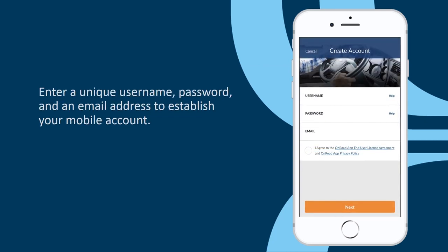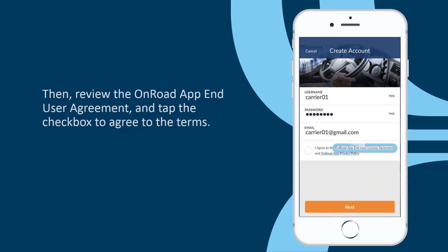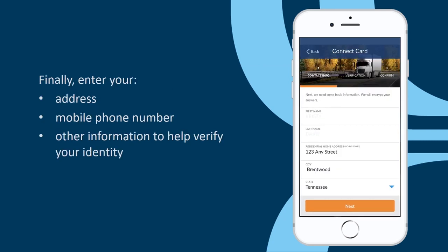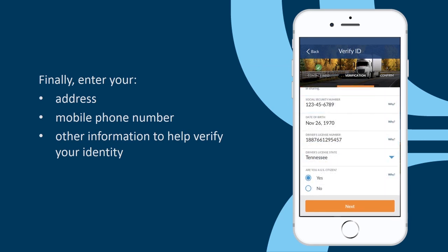Enter a unique username, password, and email address to establish your mobile account. Then, review the OnRoad app and user agreement by clicking the link and tap the checkbox to agree to the terms. Finally, enter your address, mobile phone number, and other information to help us verify your identity.